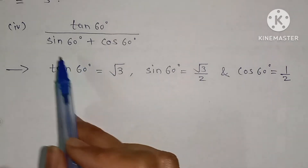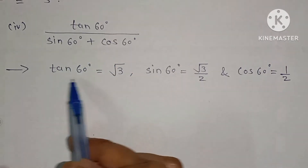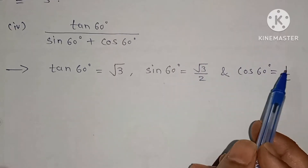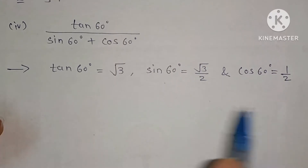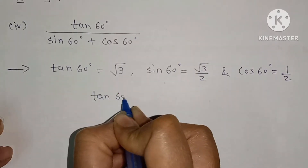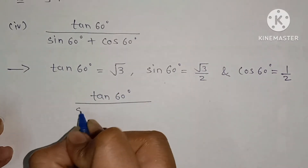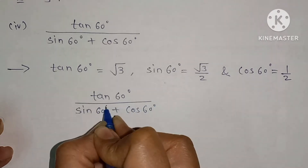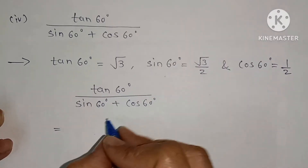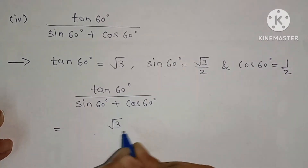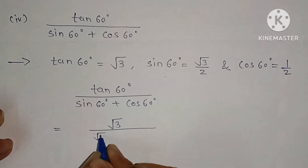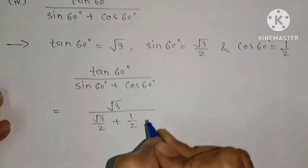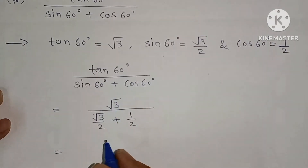Next part: tan 60 upon (sin 60 plus cos 60). Tan 60 is root 3, sin 60 is root 3 upon 2, and cos 60 is 1 upon 2. Substituting: root 3 upon (root 3 upon 2 plus 1 upon 2).